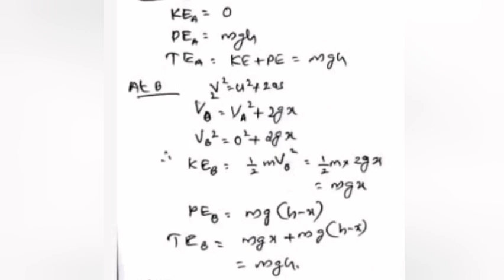At point B: v squared equals u squared plus 2as gives v_B squared equals 0 plus 2gx. Therefore KE_B equals half m times 2gx equals mgx. PE_B equals mg(h minus x). Total Energy TE_B equals mgx plus mg(h minus x) equals mgh.